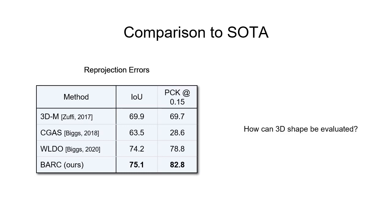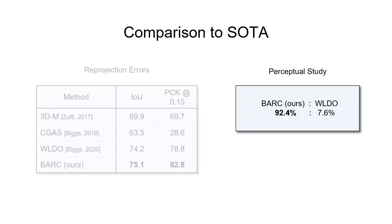Consequently, we propose two methods to evaluate 3D shape. First, we perform a perceptual study in which we ask Amazon Mechanical Turk workers to evaluate relative perceptual correctness of predicted dog shapes.